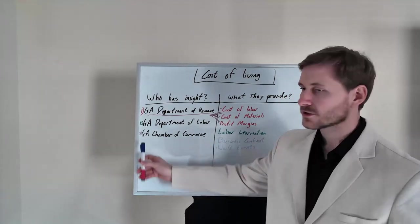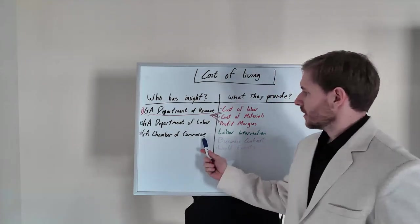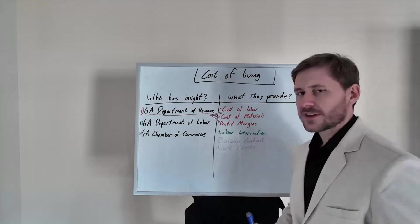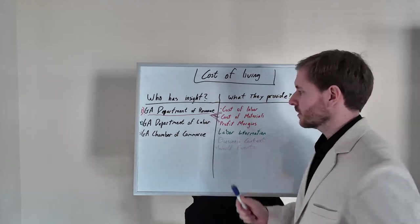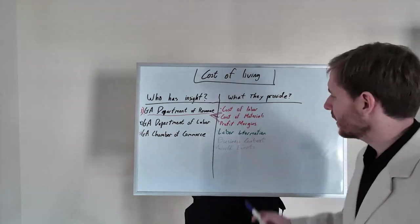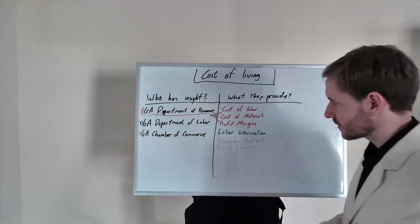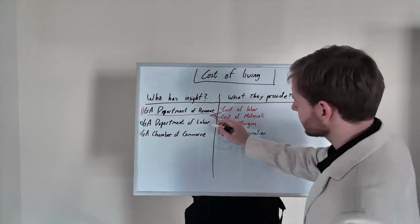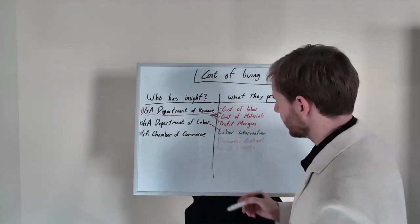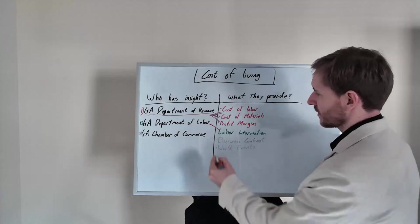Chamber of Commerce. This is not a government entity. It's a coalition of businesses. Get the state level, federal level, local level Chamber of Commerce. Get them to tell you what is the business context and the world events.